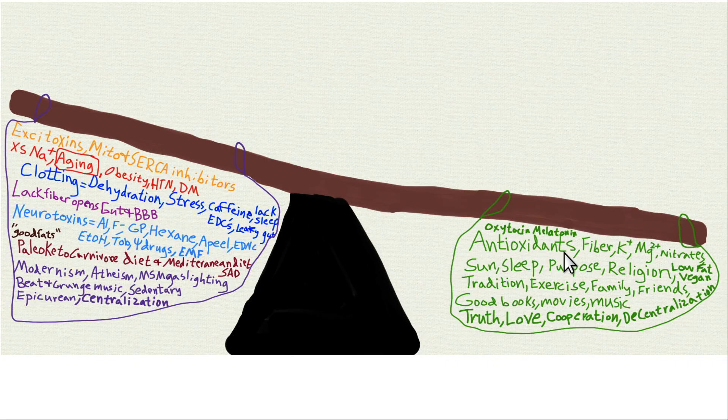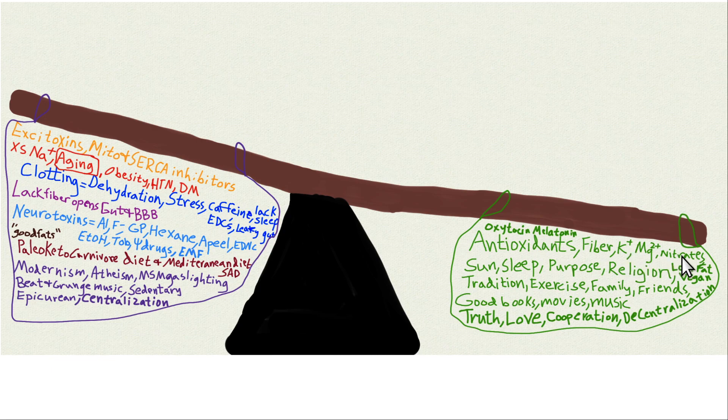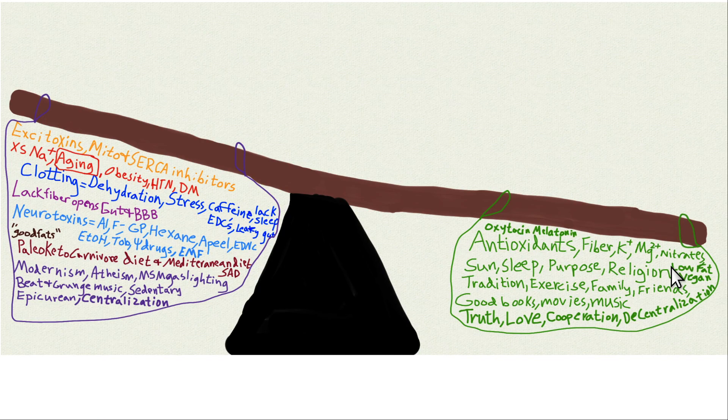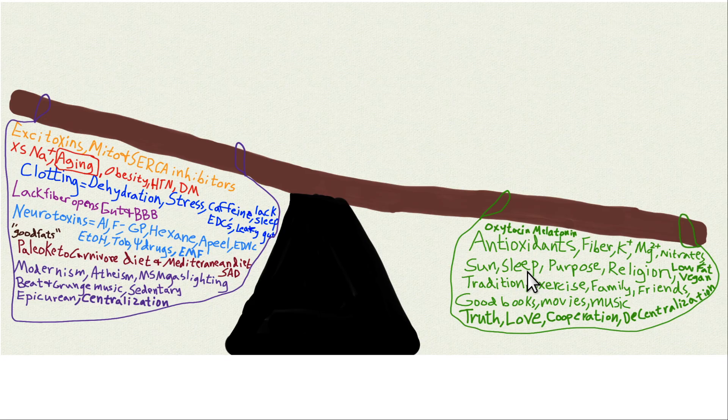We kind of know the good things. You eat a plant-based diet. You get the antioxidants, the fiber, the potassium, magnesium, nitrates, which are nitric oxide precursors, low-fat vegan diet. They all protect your arteries, protect your brain. You get your sunshine for vitamin D. You get your sleep, manage your stress, have a sense of purpose, religion. All of those things strengthen you.